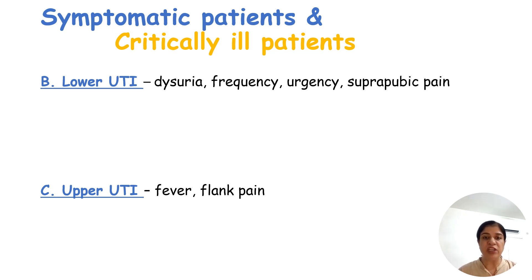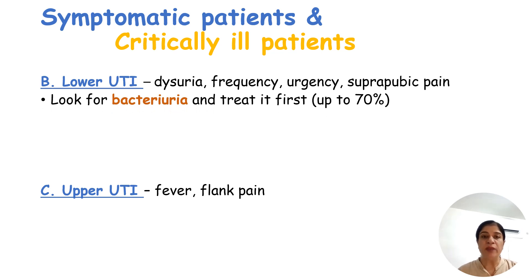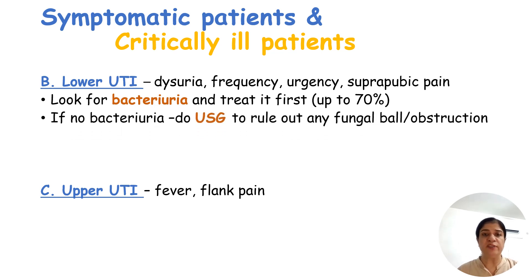Symptomatic patients and critically ill patients should also be treated. Critically ill here means patients where we cannot elicit signs and symptoms of lower or upper UTI, such as sedated ICU patients or those who are delirious or unconscious. In lower UTI cases, bacteriuria must be ruled out first and treated if present, as prospective studies show 70% of cases have additional bacteriuria. The remaining steps are similar to asymptomatic candiduria, but the patient will be treated.